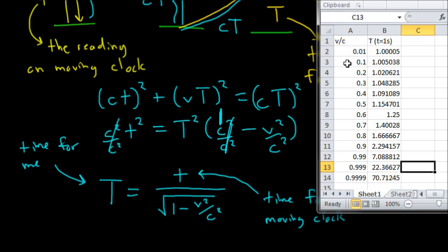So, if I'm going at 10% the speed of light, V over C equals 0.1, so I'm going at 10% the speed of light, then the time that's elapsed for me is 1.005 seconds. So, that is not a very big difference, even going at 10% the speed of light. It's only a 0.5% difference.